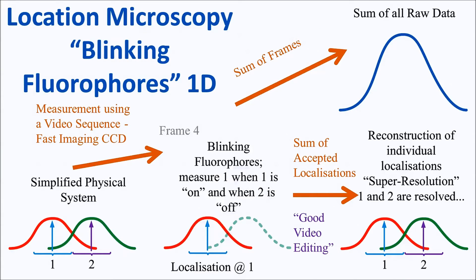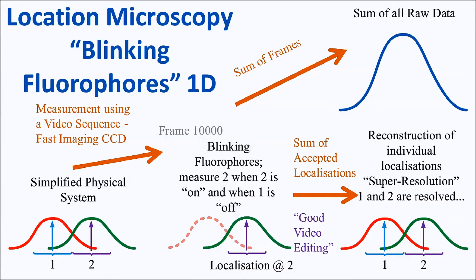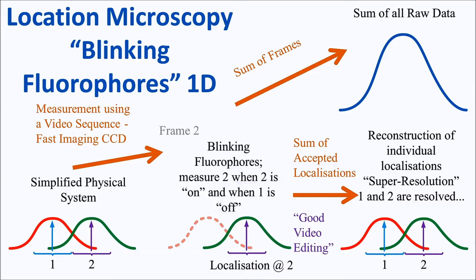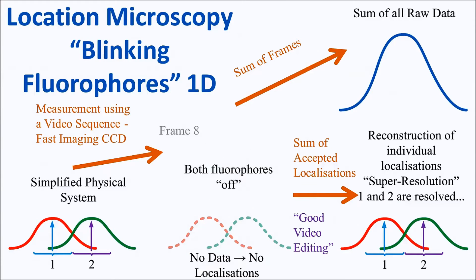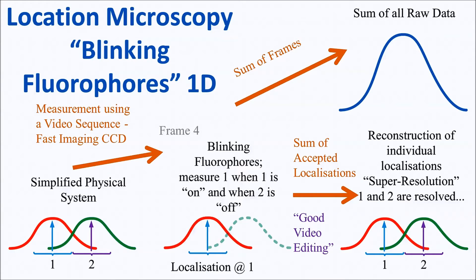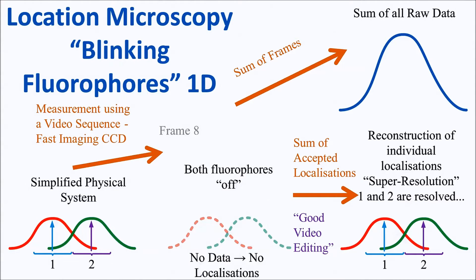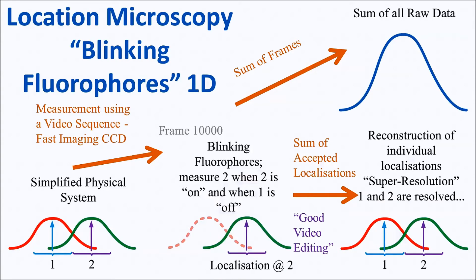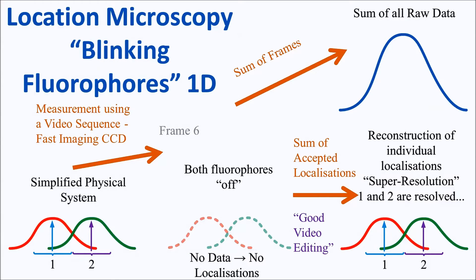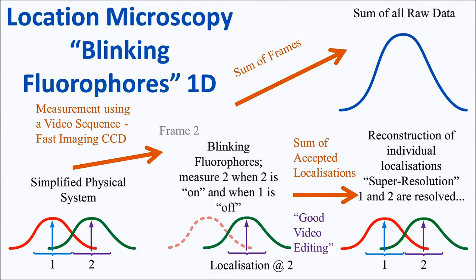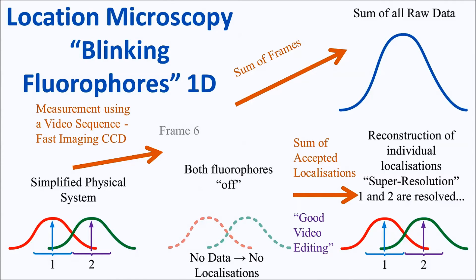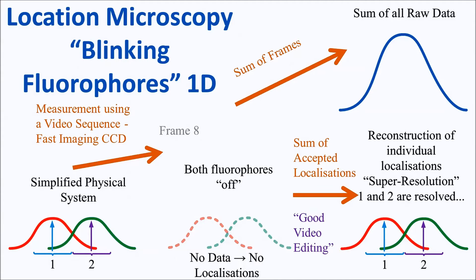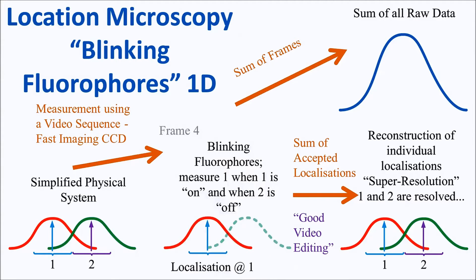If, on the other hand, we set up conditions in such a manner that the fluorophores stochastically blink, we can measure the first fluorophore without the second fluorophore, and we can localize it simply by fitting mathematically to the center of the single molecule blink. And we can do the same for the second fluorophore if we can measure it without the first fluorophore. Naturally, the more times we can measure the first fluorophore without the second fluorophore, the better we can localize it. And the more times we can measure the second fluorophore without the first, the more accurately we can localize it.